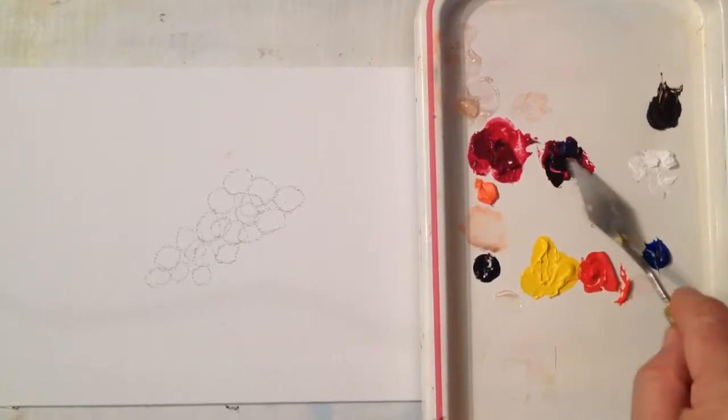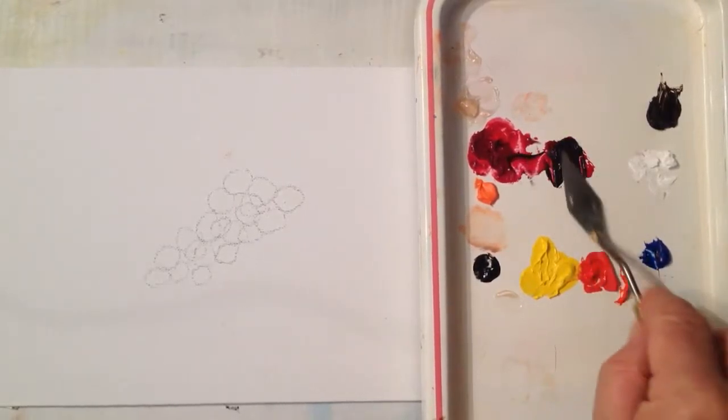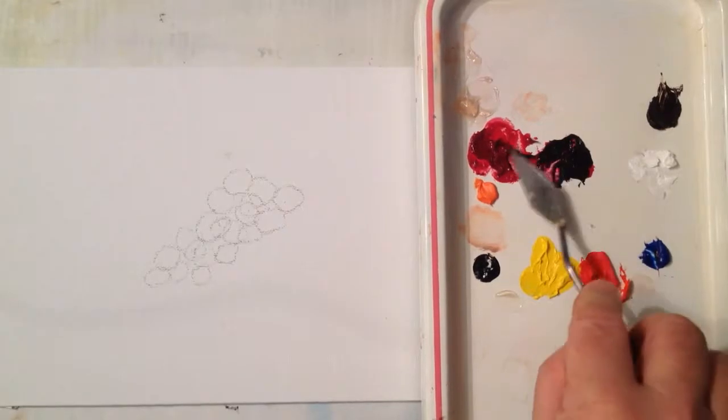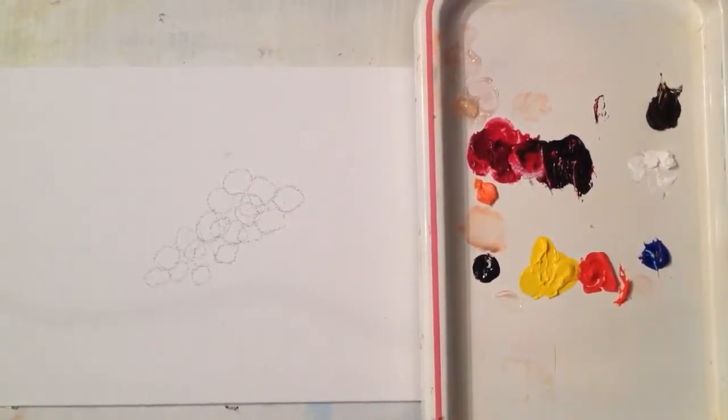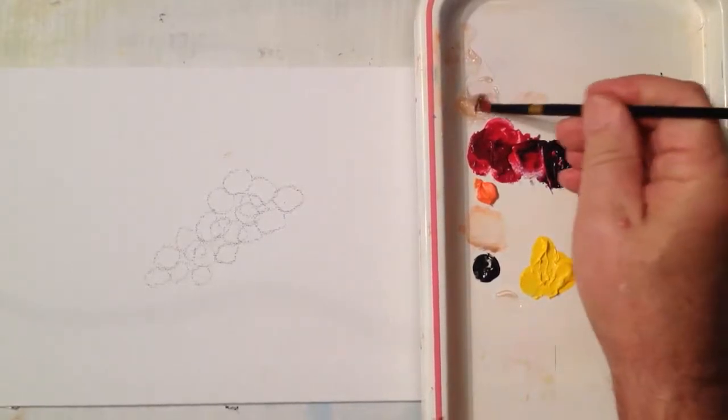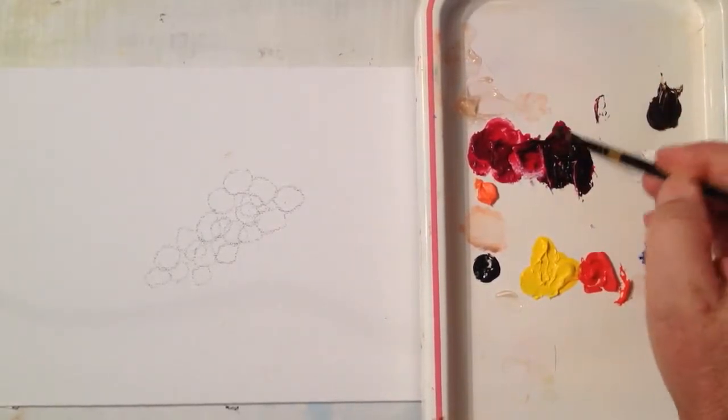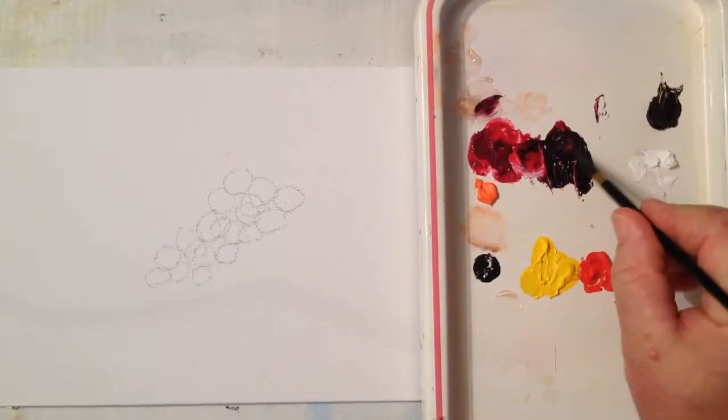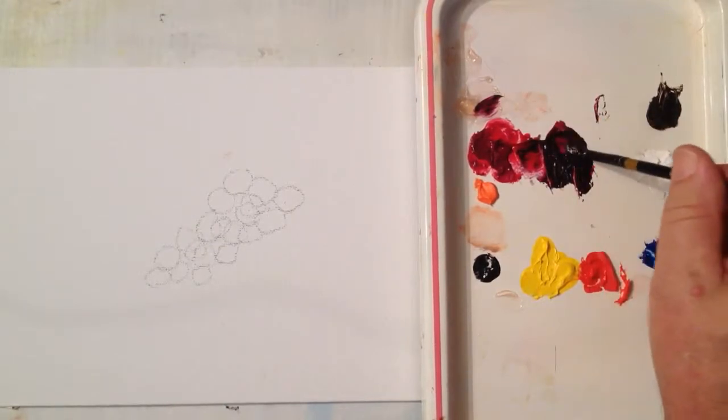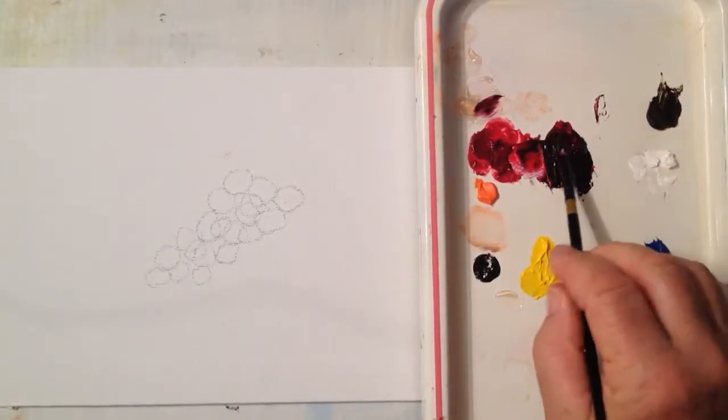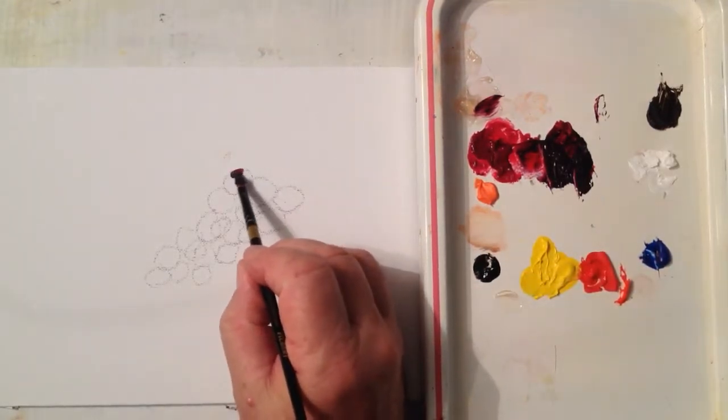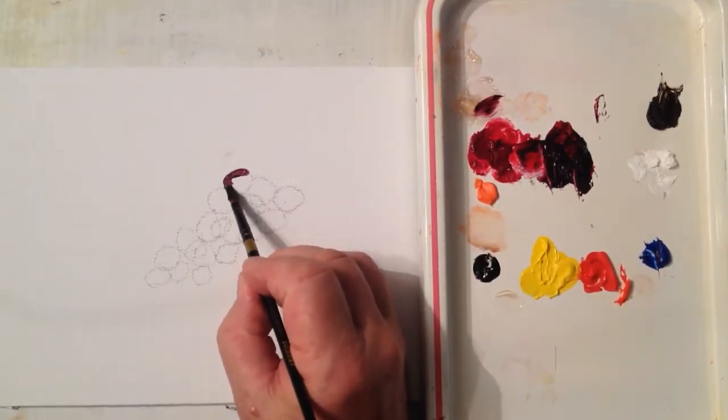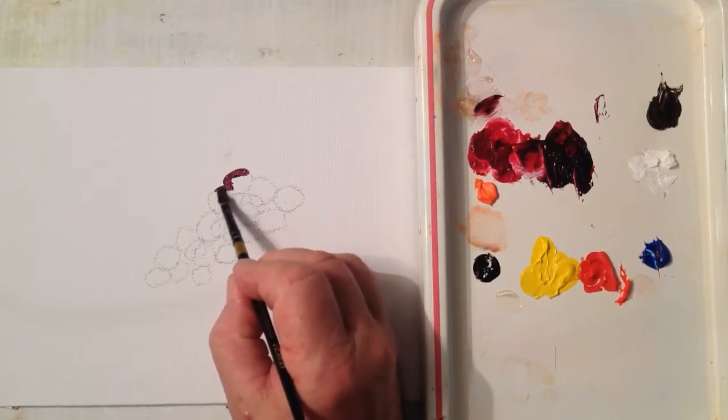The idea being, we're going to put a bluish red on the dark side to begin the grapes. I have a bit of medium I'm using also. What I'm trying to do is get the paint in such a manner that it goes smoothly on the canvas.